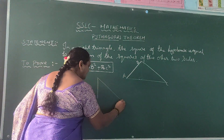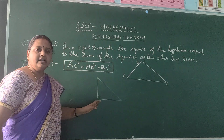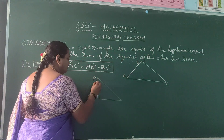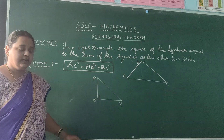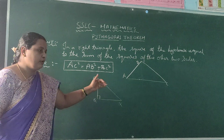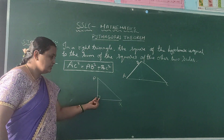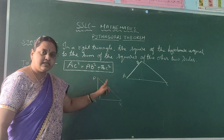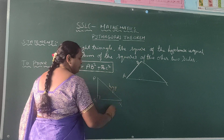Let me draw a right angle triangle. Right angle means one vertex should be 90 degrees. So let me draw triangle PQR — PQR is a right angle triangle with right angle at Q. To find the hypotenuse, see the 90 degree angle. Opposite to this 90 degree, that side is nothing but the hypotenuse. So PR is the hypotenuse.